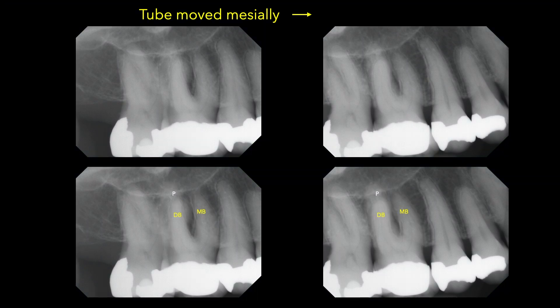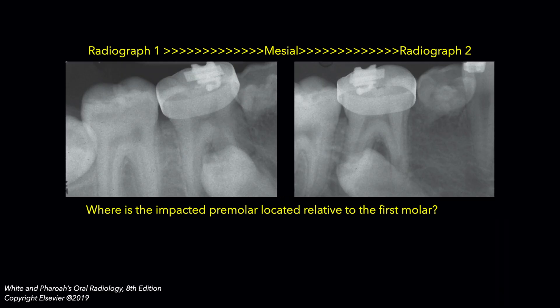Identify the mesiobuccal, distobuccal, and palatal roots, and note how the images of these roots shift between the two projections. This is particularly important in endodontic treatment planning, where one of the diagnostic assessments is to evaluate the roots, their morphology, and the number of pulp canals.